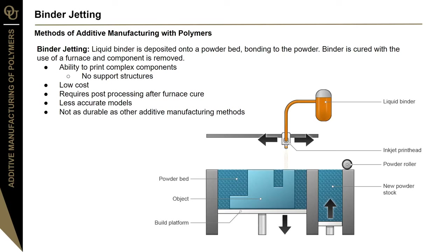Binder jetting is an additive manufacturing process where a liquid binder is deposited onto a powder bed. The binder bonds to the powder at the desired cross-sectional area, the printing bed is lowered, and the process continues until the entirety of the part has been bound. The binder is then cured in a furnace with the excess material. Advantages include the ability to print complex components without support structures and relatively low cost. However, parts are generally less accurate and require post-processing after furnace cure, which can vary based on the intended application.